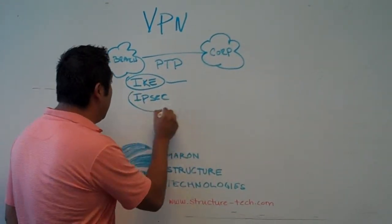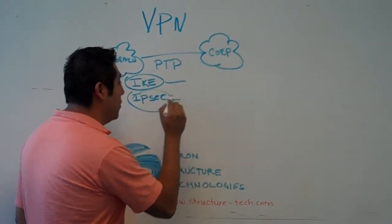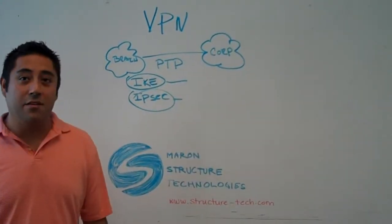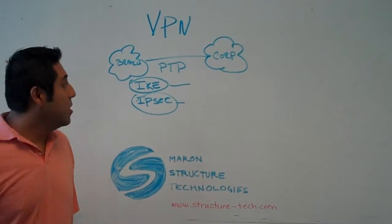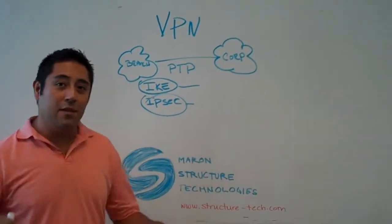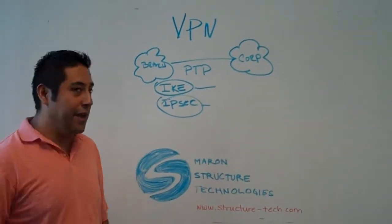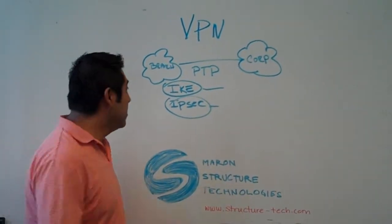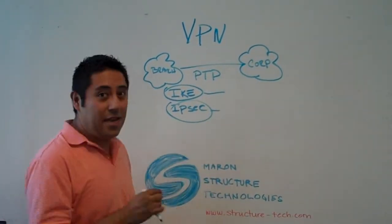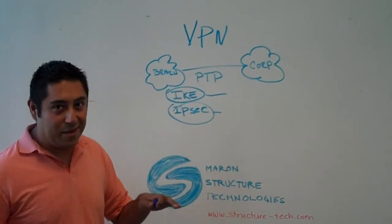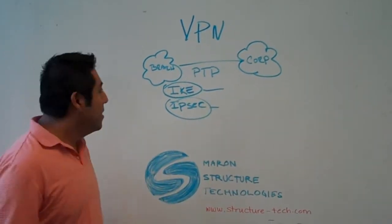And then you set up your IPsec, which is your encryption and tunneling mechanism. One cannot be done without the other — well, actually it can be done. IPsec cannot be done without IKE, but IKE can be done without IPsec.